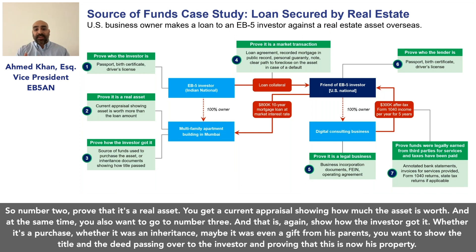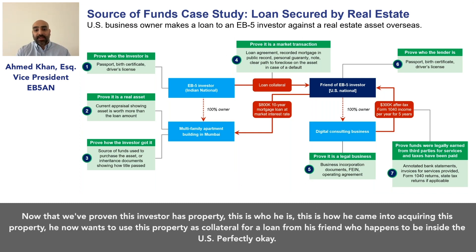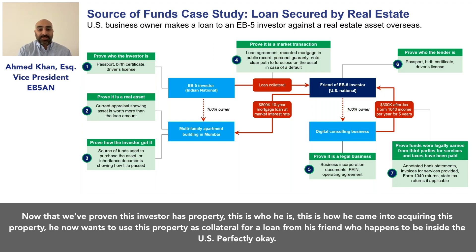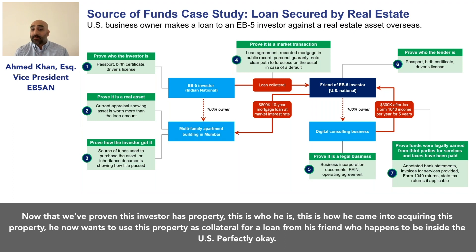Now that we've proven this investor has property, this is who he is, and this is how he came to acquire it. He now wants to use this property as collateral for a loan from his friend who happens to be inside the U.S. — and that's perfectly okay.